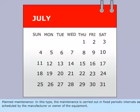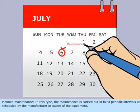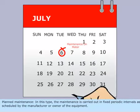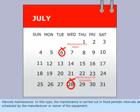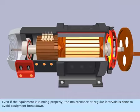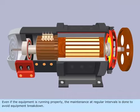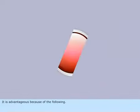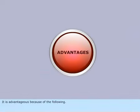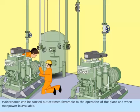Planned maintenance: In this type, the maintenance is carried out in fixed periodic intervals as scheduled by the manufacturer or owner of the equipment. Even if the equipment is running properly, maintenance at regular intervals is done to avoid equipment breakdown. It is advantageous because maintenance can be carried out at times favourable to the operation of the plant and when manpower is available.